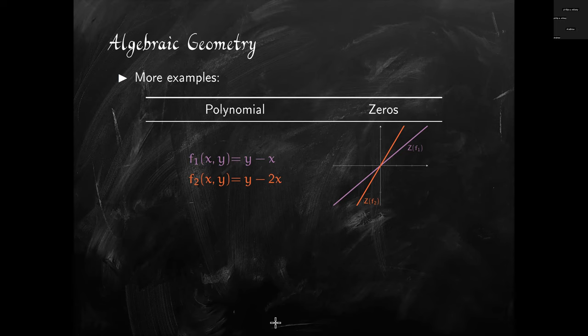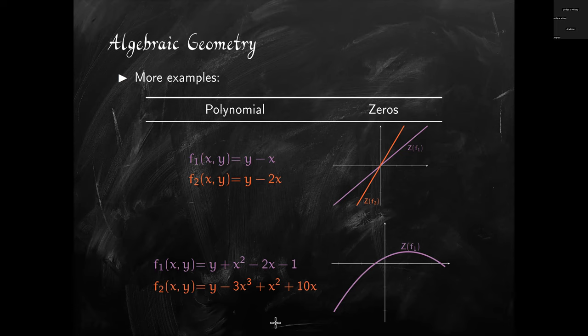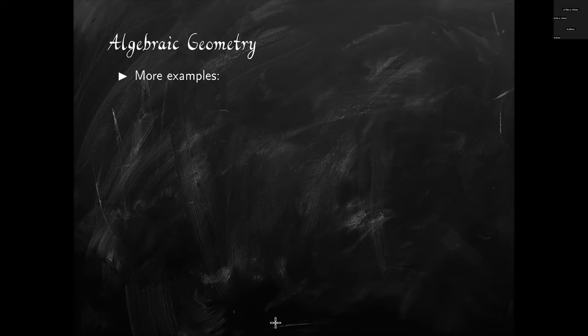Next, let's look at zeros of a polynomial containing squared terms: y plus x squared minus 2x minus 1. The zeros no longer form a line because of the squared term. If we take a cubic term — a polynomial with x cubed — the zero set looks more complicated. The zeros look more and more varied as we increase the degree of the polynomial. I'm showing you all these examples to showcase the fact that there are many very different zero sets that can occur when you study zeros of polynomials.